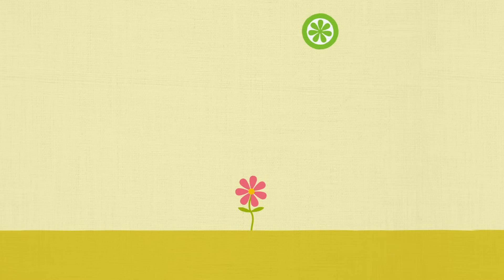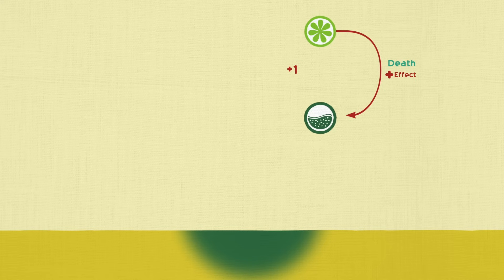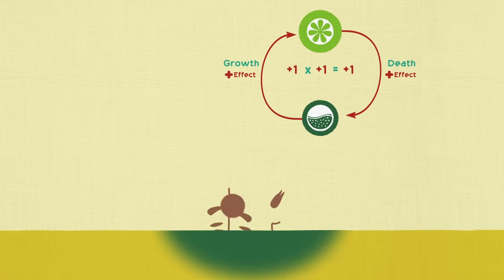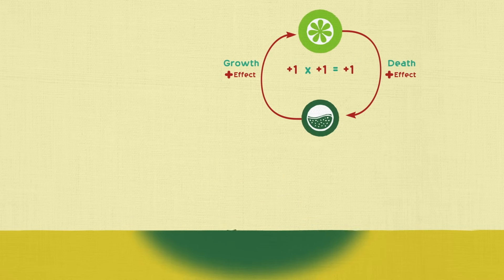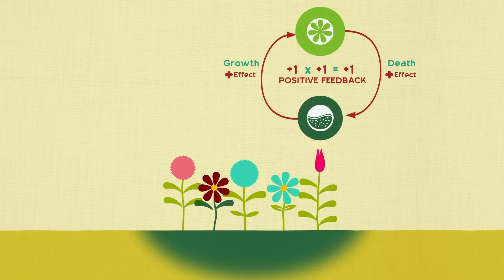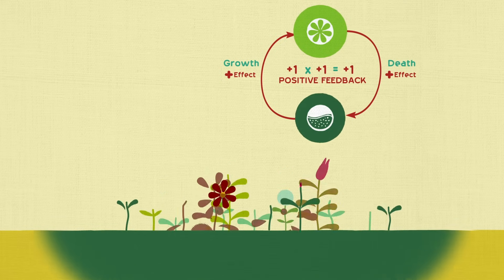When plants die, the dead material enriches the soil with humus, a stable mass of organic matter, providing moisture and nutrients for other plants to grow. The more plants grow and die, the more humus is produced, allowing even more plants to grow, and so on. This is an example of positive feedback, an essential force in the buildup of ecosystems.